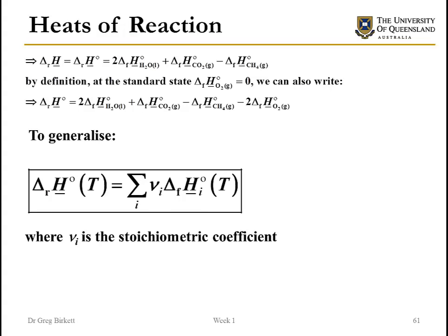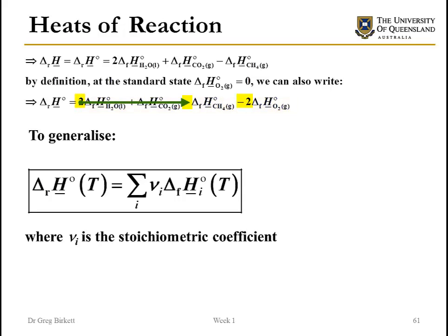When we add these equations together to give the overall heat of reaction, we can calculate it purely from heats of formation data. Knowing that the heat of formation of O2 gas at 298 Kelvin is zero, we can include it in the equation. This generalises to a very important equation: the heat of reaction equals the sum of the stoichiometric coefficient multiplied by the heat of formation for each component. This equation will be used repeatedly throughout the course.